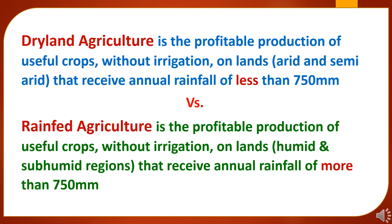Now to understand the difference between dryland agriculture and rain-fed agriculture: dryland agriculture is the profitable production of useful crops without irrigation on lands in arid and sub-humid regions that receive annual rainfall of less than 750 mm, while rain-fed agriculture is the profitable production of useful crops without irrigation on lands in humid and sub-humid regions that receive annual rainfall of more than 750 mm.